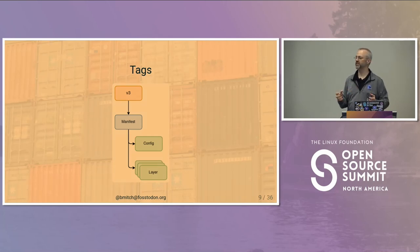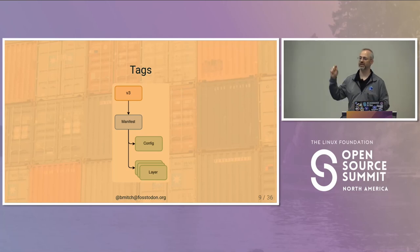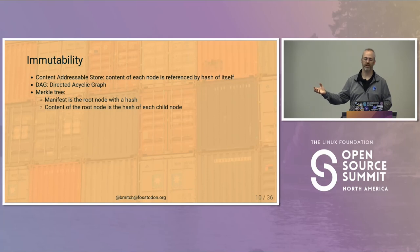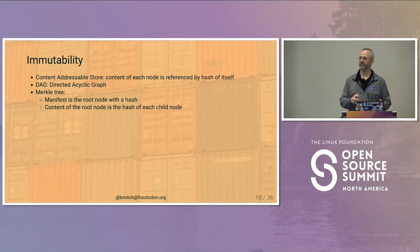When you pin your images and say I want to run this image with this specific hash, what you're pinning is that manifest hash. And if you ever say I want to pull down this one specific image, that's what you're pulling down — that manifest hash. The result is a nice immutability guarantee. Because what we have is that content addressable store combined with a structure called a DAG — a directed acyclic graph. More related to what you're probably familiar with from CS classes is a Merkle tree.